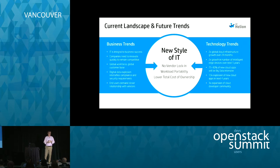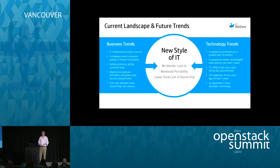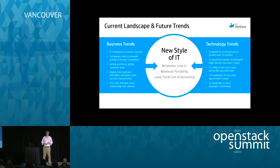People have talked about virtualizing every application and putting a web front end on it — that's not what I mean. In the second revolution of infrastructure computing, you wrote your application; if you wanted it highly available, you clustered the underlying infrastructure; if it wasn't running fast enough, you bought faster machines. If your in-memory data set got too large, you put more memory in. You affected scalability and reliability by modifying the underlying infrastructure.